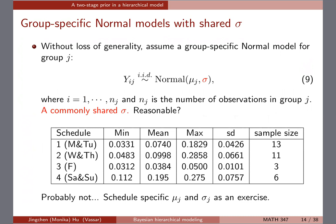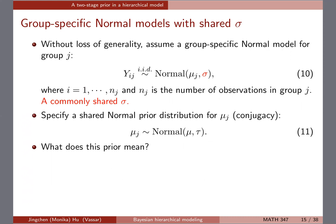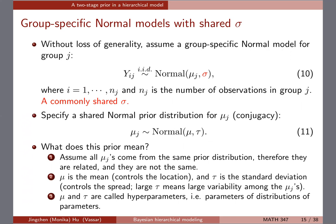So to summarize: we assume all of the mu_j's come from the same prior — they are related but not the same, they just come from the same distribution. Mu is the mean and controls the location of where the mu_j's will be. Tau is the standard deviation and controls the spread: a large tau means larger variability among the mu_j's.